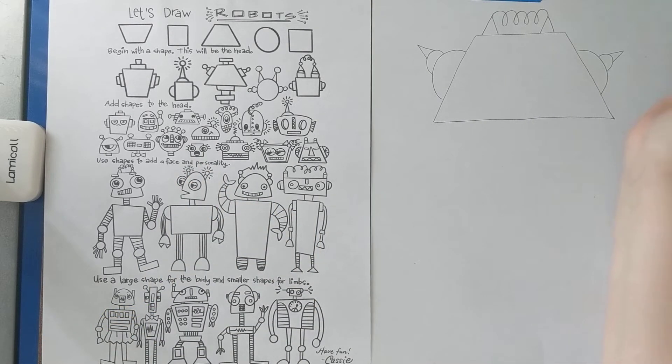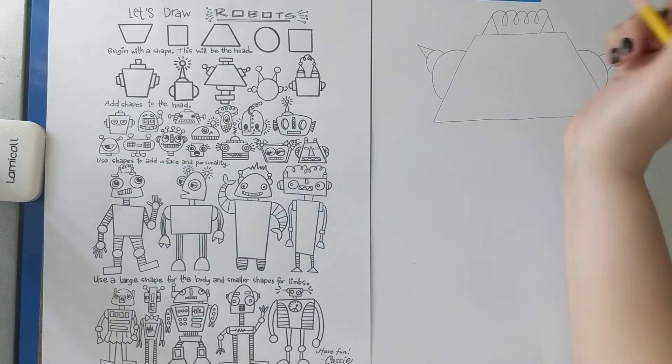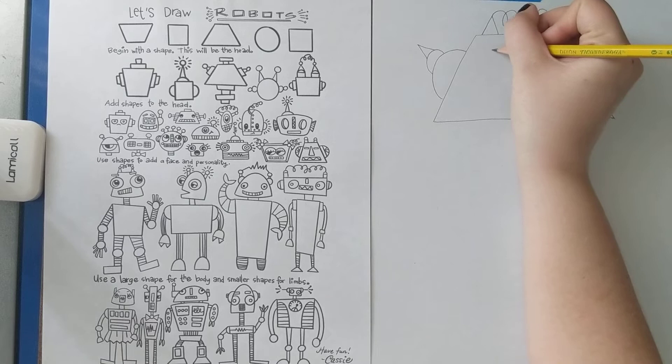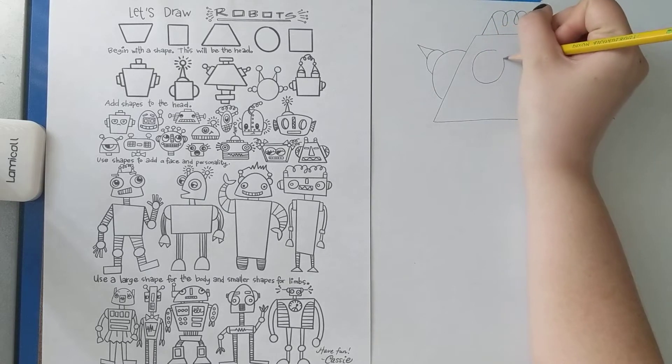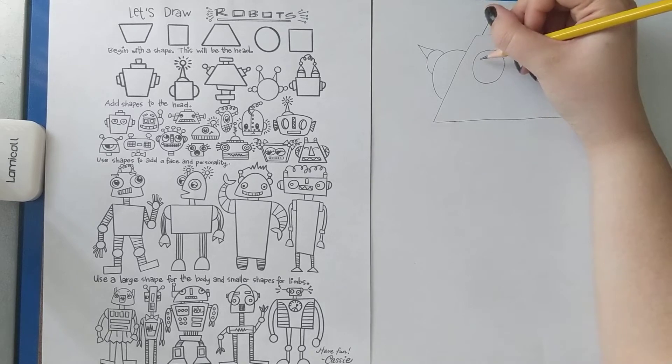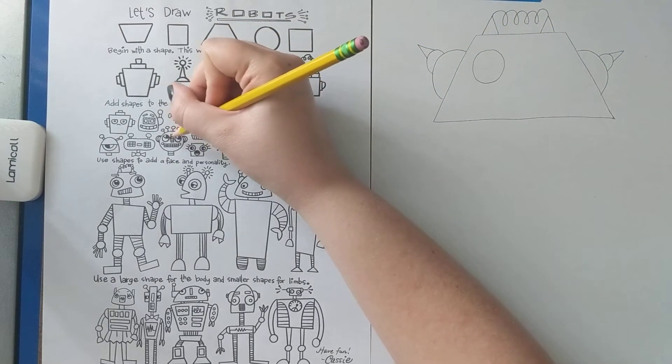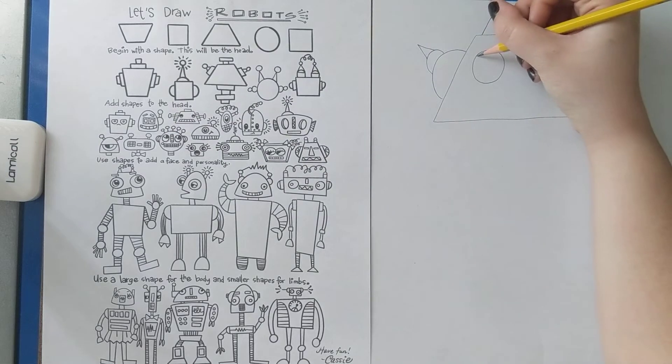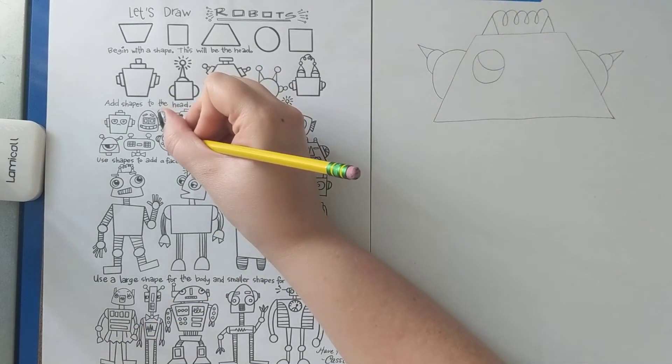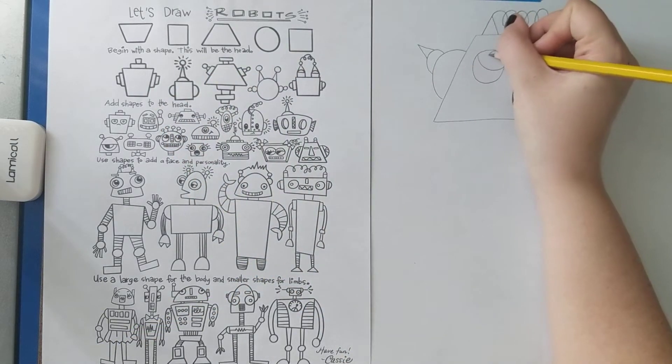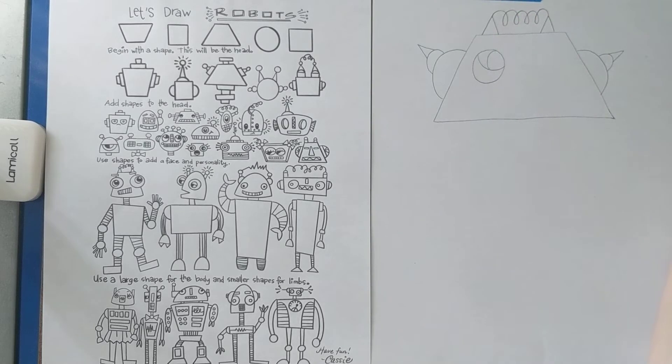So I think I want... I like these eyes. Maybe we'll do something like that. So it starts with a circle. And then it looks like maybe they turned it into a crescent, like a moon. So I'll just add that little line there. And then it almost looks like they made another little crescent here. Easy peasy. Now I'm going to do the other eye. All right. My eyes are done.